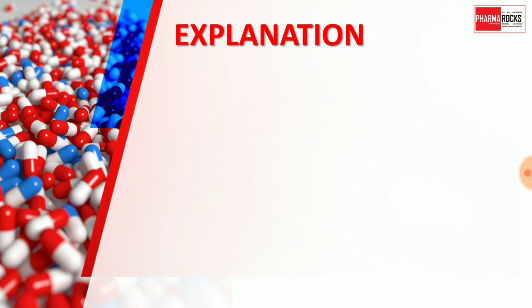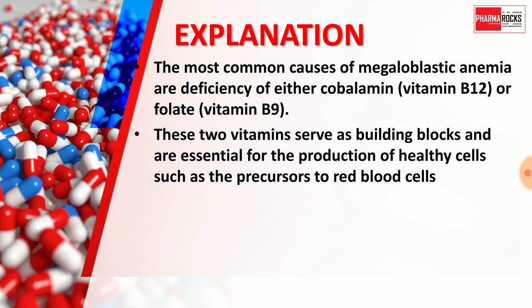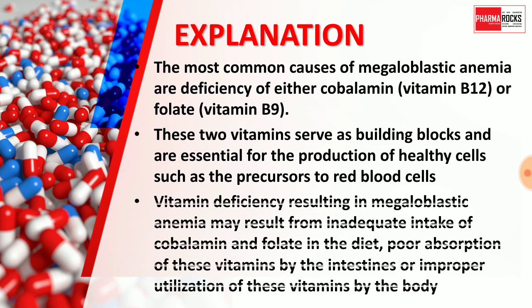The most common causes of megaloblastic anemia are deficiency of either cobalamin (Vitamin B12) or folate (Vitamin B9). These two vitamins serve as building blocks and are essential for the production of healthy cells such as the precursor to red blood cells. Vitamin deficiency resulting in megaloblastic anemia may result from inadequate intake of cobalamin and folate in the diet, poor absorption of these vitamins by the intestine, or improper utilization by the body.